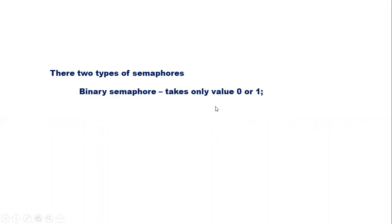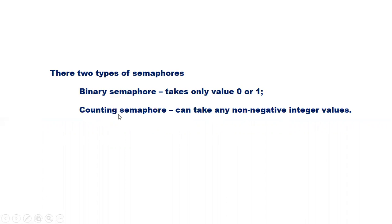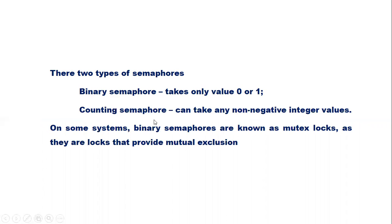There are two types of semaphores. Binary semaphore, which can take only the value either 0 or 1. The second one is the counting semaphore, which can take any non-negative integer values. On some systems, binary semaphores are also known as mutex locks, as they are locks that provide for mutual exclusion.